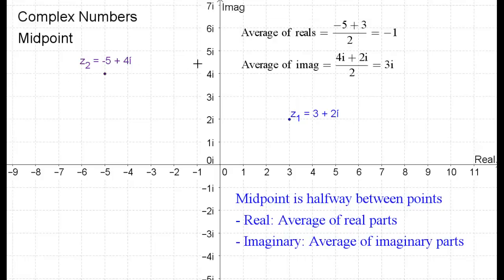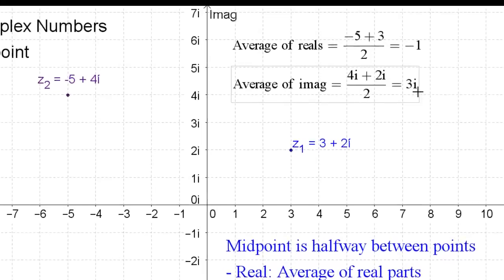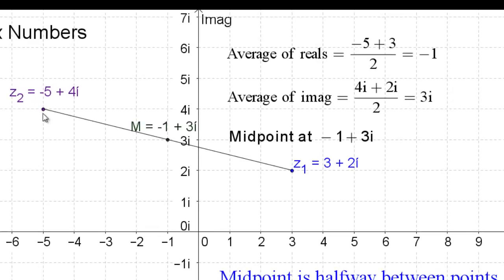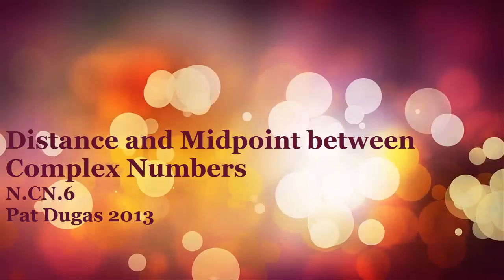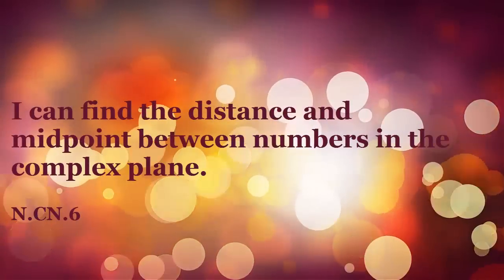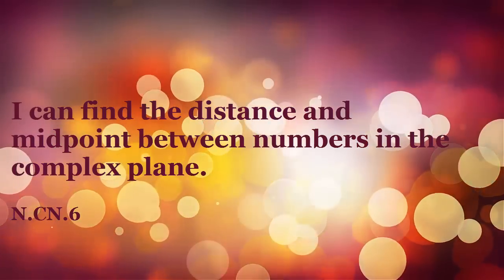Finding the halfway point between the two imaginary parts, we get 4i plus 2i, or 6i, divided by 2, which is 3i. So the imaginary vertical component is 3i. The midpoint of the segment between Z1 and Z2 lies at real part negative 1, complex part 3i — that is, negative 1 plus 3i. And visually, you can see that's the midpoint. So finding the distance and the midpoint between complex numbers is very similar to what you've done with x, y coordinates in the rectangular system.